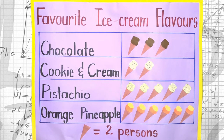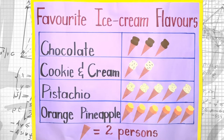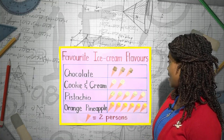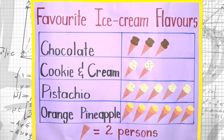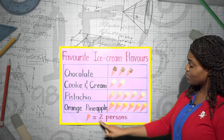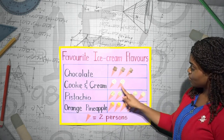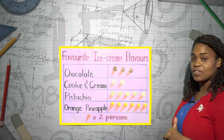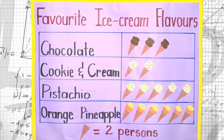Now that we've created our pictograph, we're going to interpret it. Our pictograph shows chocolate, cookie and cream, pistachio, and orange pineapple. How many more persons enjoy chocolate ice cream than cookie and cream? We look at chocolate — six persons — and cookie and cream — four persons — so six minus four means two more persons enjoy eating chocolate ice cream than cookie and cream.